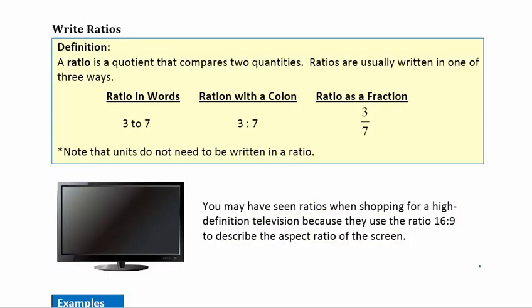So writing ratios. Let's start with a definition. A ratio is a quotient that compares two quantities. Ratios usually are written in one of three ways. First is in words, and we would say 3 to 7. We can write that shorthand with a colon, it's still read 3 to 7, and we can also write this as a fraction. One thing to note is that units do not need to be written in a ratio. Notice we just have numbers here. Later on we're going to get into rates, and rates compare things that are different, so we need to make sure we write the units in a rate, but in a ratio all we need are just the numbers.